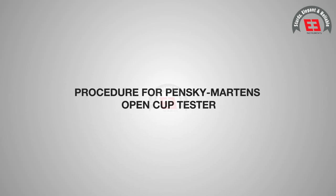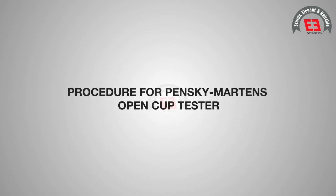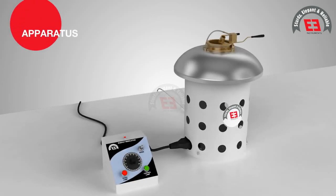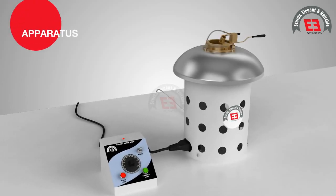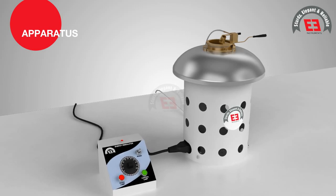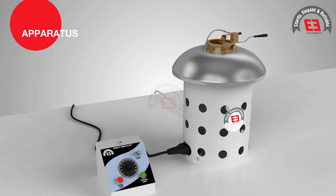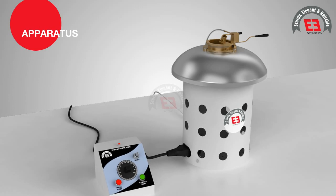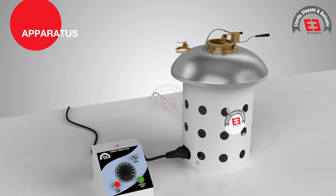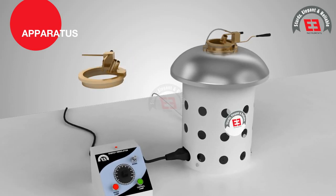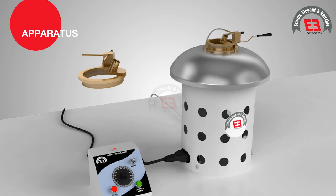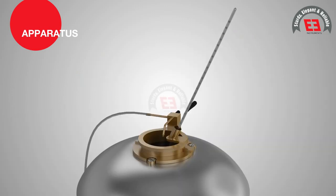Procedure for Penske Martin's Open Cup Tester: Open Cup Tester is same as Penske Martin's Close Cup Tester with the modification that the cover of the cup is replaced by a clip that encircles the upper rim of the cup. This ring also carries a test flame and suitable thermometer.